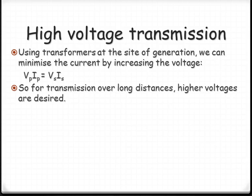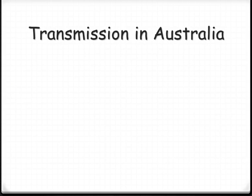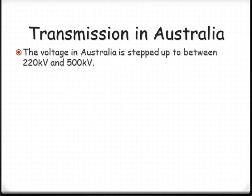So in Australia, that means voltages are being stepped up between about 220 kilovolts and 500 kilovolts. So pretty significant voltages that we're sending it over the longer distances.